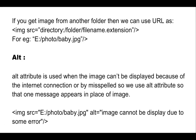The alt attribute is used when the image cannot be displayed — because of the internet connection or a misspelled URL. We use the alt attribute so that a message appears in place of the image. The syntax is: open the image tag, then the src attribute with the full URL, then the alt attribute with some message. Then close the image tag.